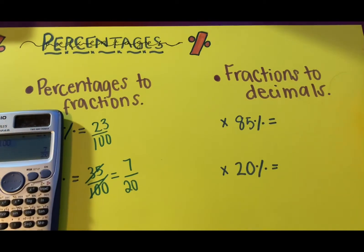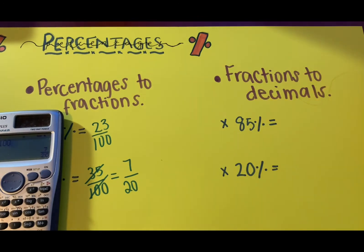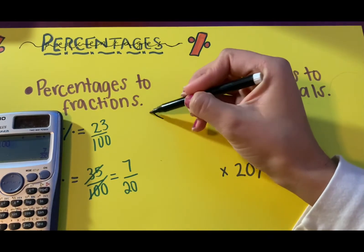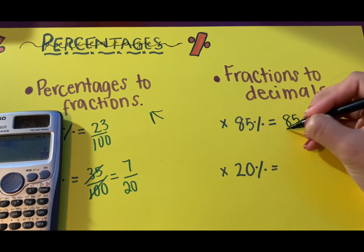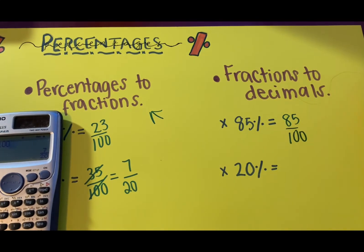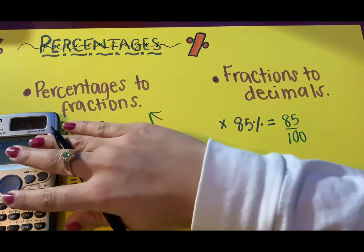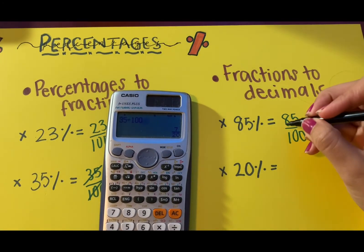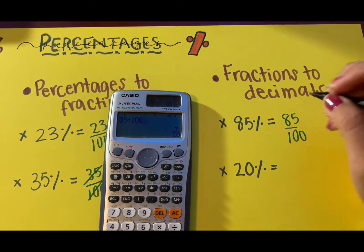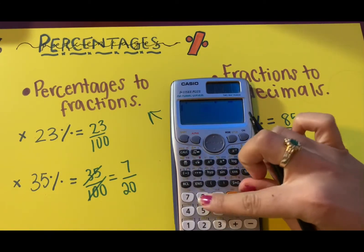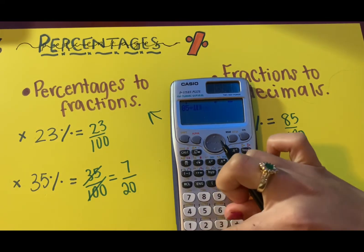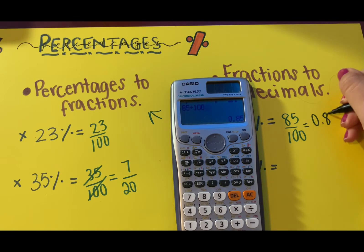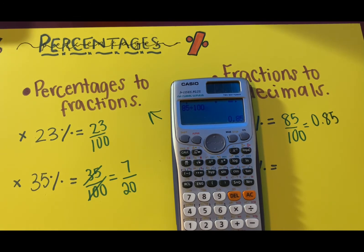Now fractions to decimals, it involves two steps. The first step is to first convert it to fractions. So what you do is 85 over 100. Okay, 85 over 100. Now you simplify it or you either just put it in the calculator. I will just put it in the calculator. That's your answer. That's your decimal. You divide it.